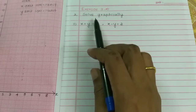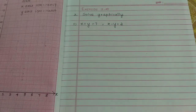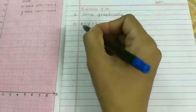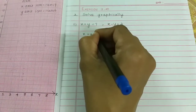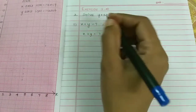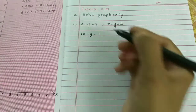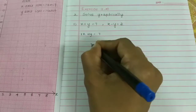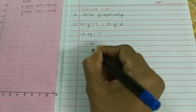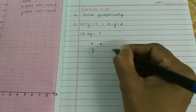We have to write the solution. Now we have the first equation, x plus y equal to 7. The x coefficient is 1 and the y coefficient is 1. So if you want to do this, let's take two x-y values. Take the x value to 0, and take the y value to 0.